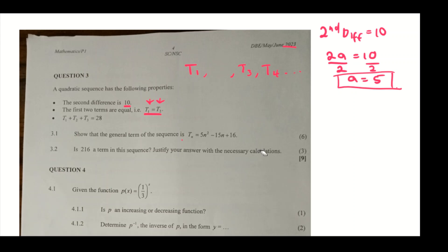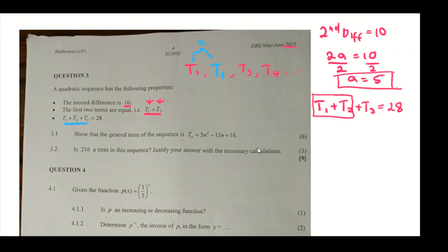Since t1 equals t2, instead of writing t2 I'll write t1 — they are the same thing. We are also told that t1 plus t2 plus t3 equals 28. Since t1 and t2 are equal, I can write t1 plus t1 plus t3 equals 28, which gives us 2t1 plus t3 equals 28.